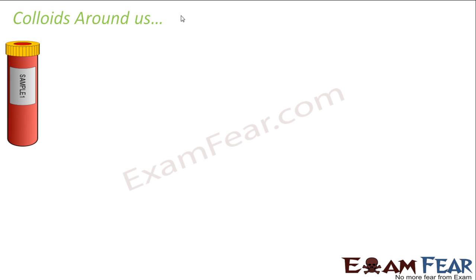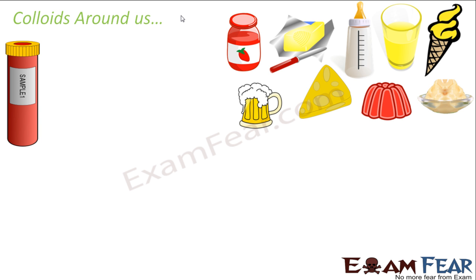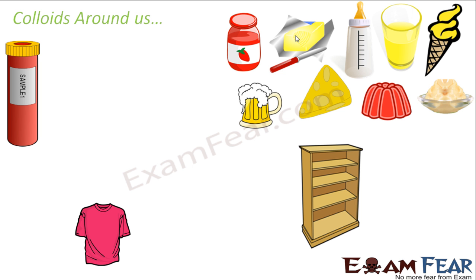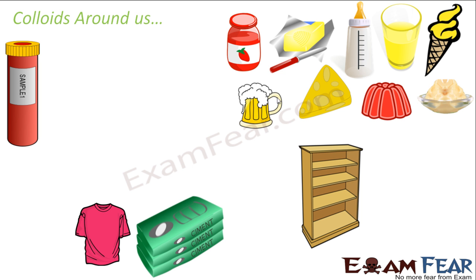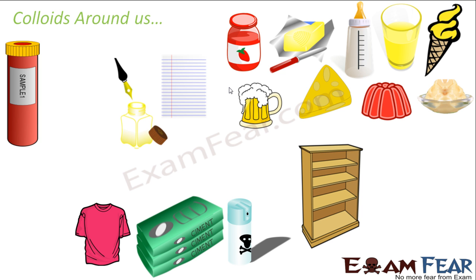Next is colloids around us. Most of the substances we see around us are colloids. Blood is a colloid — when you hurt yourself, blood coagulates and clots, stopping the bleeding. The food we eat — milk, butter, ice cream, fruit juice, chili, cheese, jelly, mayonnaise — these are all colloids. The clothes we wear, the wooden furniture, and the cement-water mixture used in houses are all colloids.